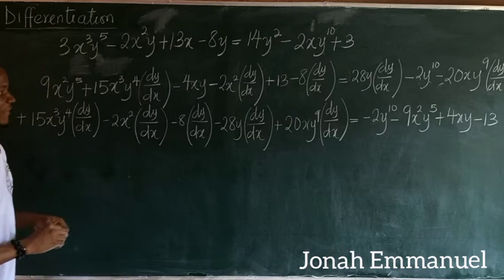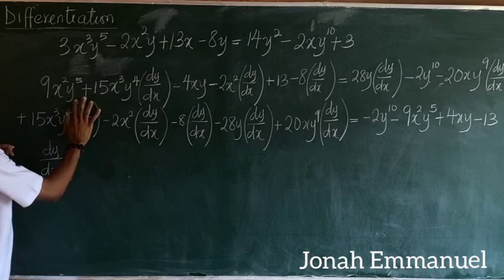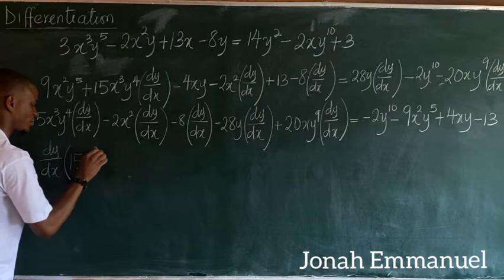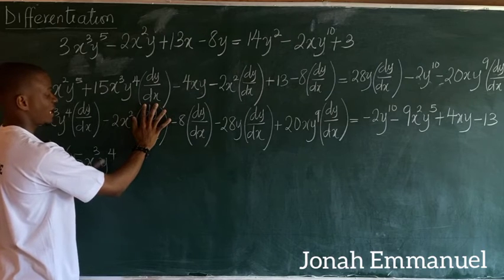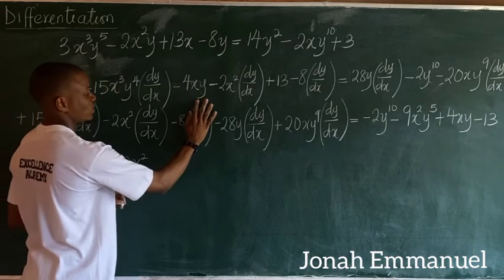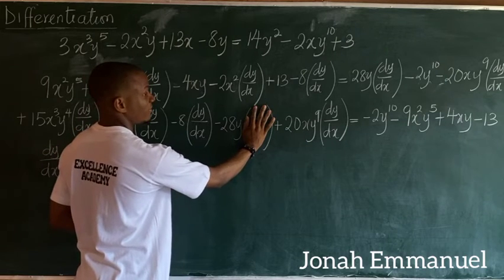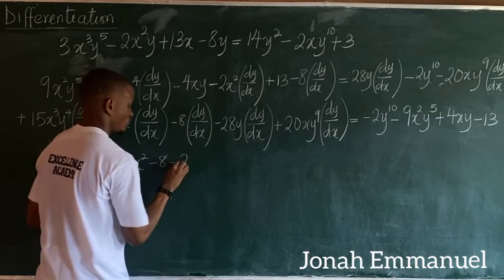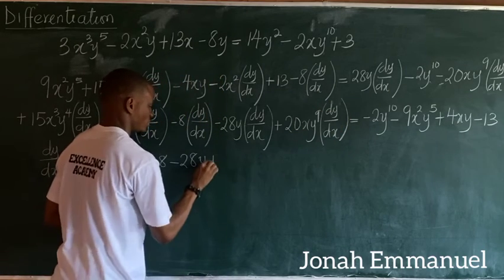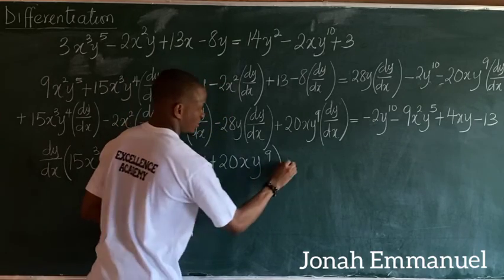Now I'll factorize by taking out dy/dx from the left side. This gives dy/dx times the bracket: 15x³y⁴ minus 2x² minus 8 minus 28y plus 20xy⁹. This equals the right-hand side expression.